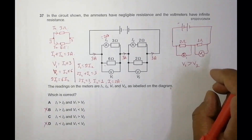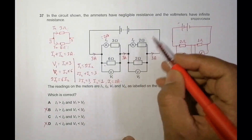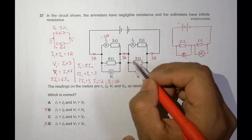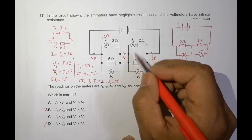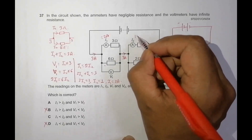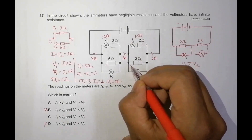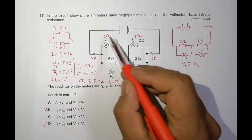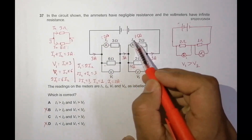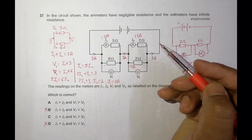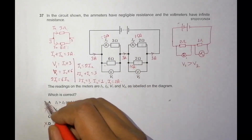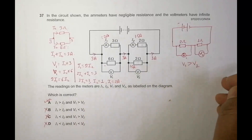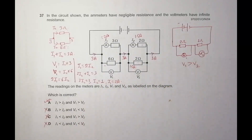For the second parallel combination, since both resistances are equal, the current of 3 amperes divides equally into both branches, giving 1.5 amperes each. So comparing: I1 equals 2 amperes and I2 equals 1.5 amperes, meaning I1 is more than I2. Therefore choice A is correct and choice C is disqualified.